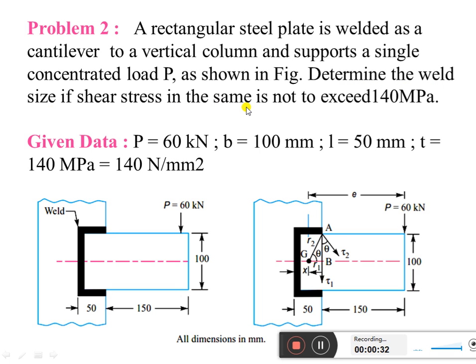So this is the given diagram. The load is applied at the end of the plate, P equal to 60 kilonewton. The size of this plate will be given. This dimension is 150 and here the weld joint is 50 mm.